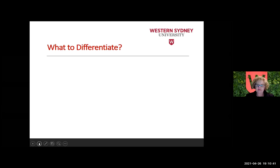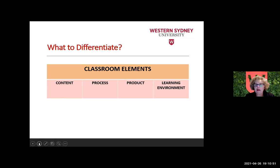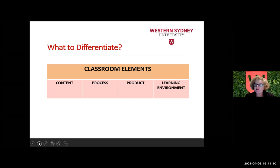What to differentiate? The way I would break this up is: first, looking at classroom elements — there are four parts. Content, process (the how, the doing), product (what is the actual output), and fourthly, considering what the learning environment would be. What is our classroom? How do all those things come together as elements or individual components to make a successful experience for both the students and yourself as a classroom teacher?